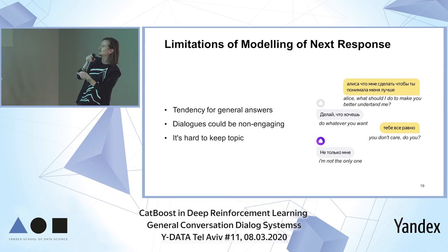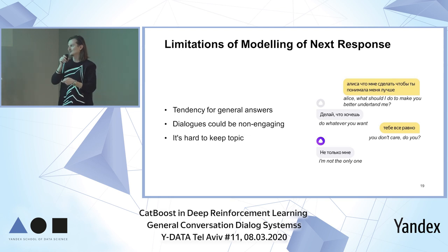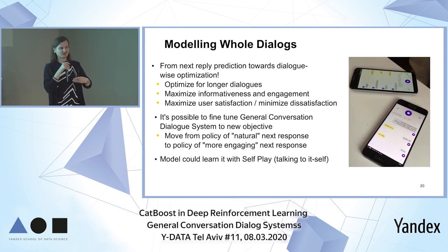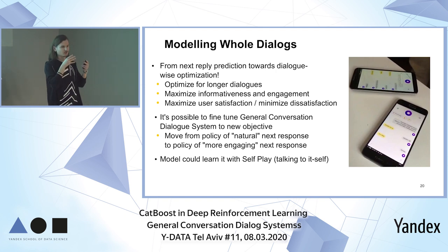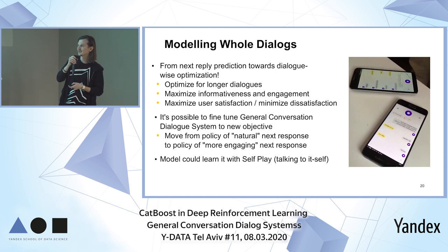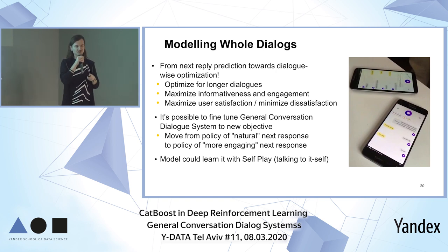Here's an example of a non-engaging model. Alice: 'What should I do to make you better understand me?' Response: 'Do whatever you want.' 'You don't care, do you?' 'I'm not the only one who doesn't care.' In order to fight these limitations, we need to start optimizing the dialogue as a whole — optimize for longer dialogues, more informative dialogues, more engaging ones. We try to maximize user satisfaction or minimize user dissatisfaction, by moving our current model toward a new point that also tries to maximize dialogue engagement.